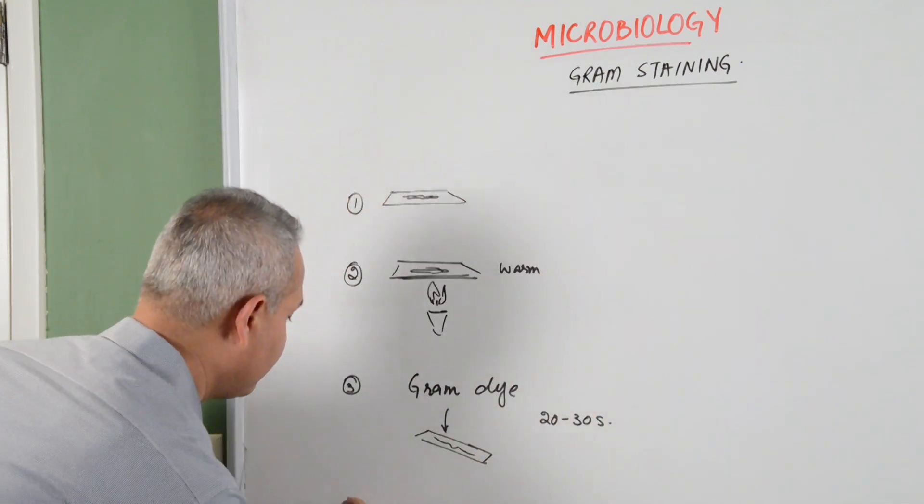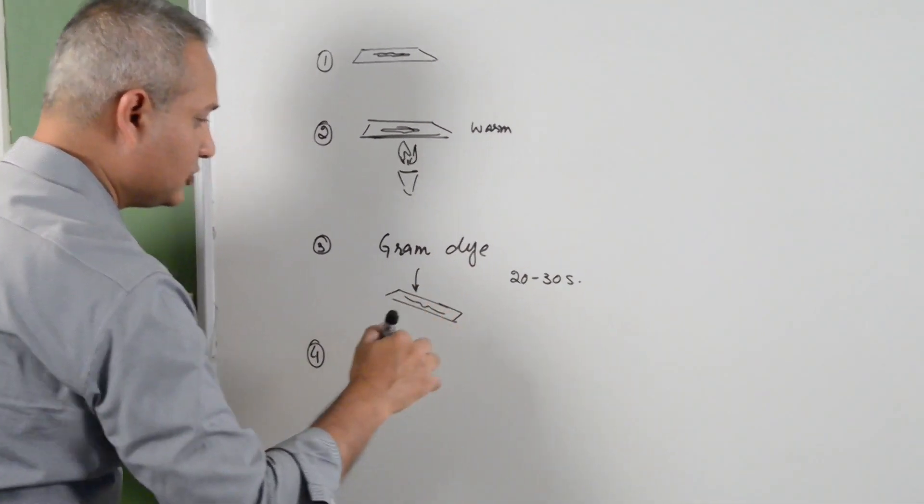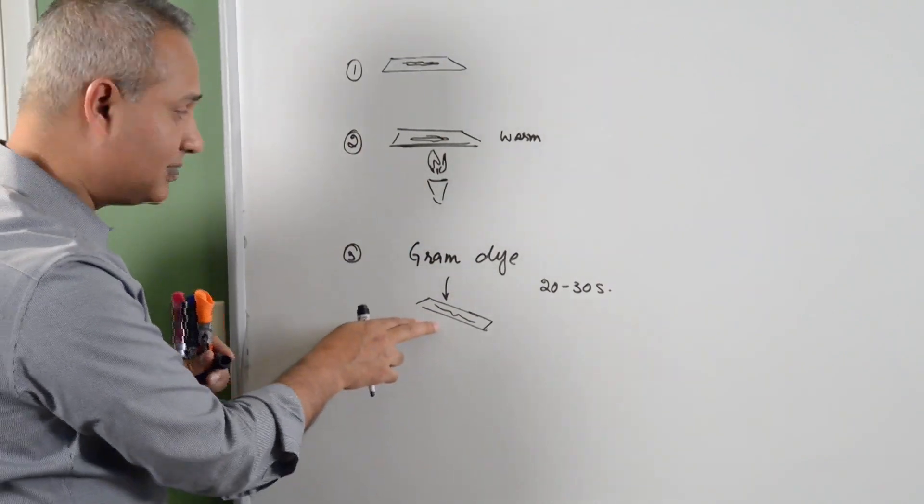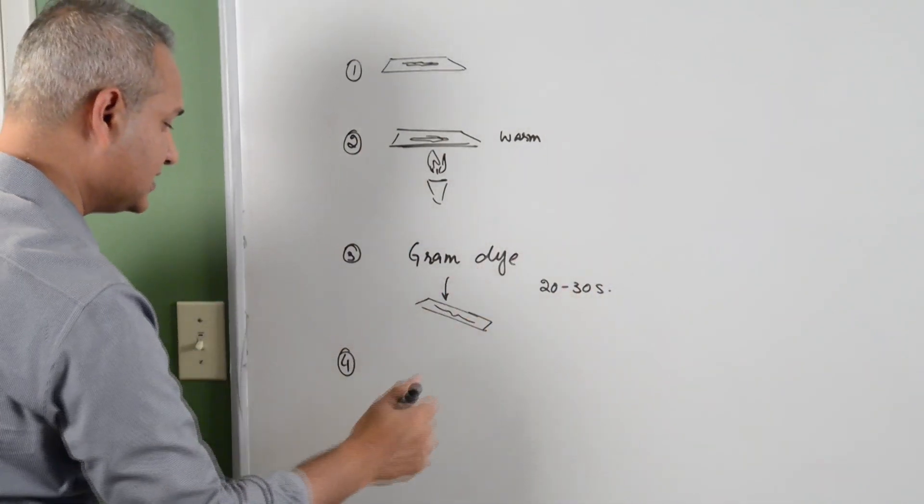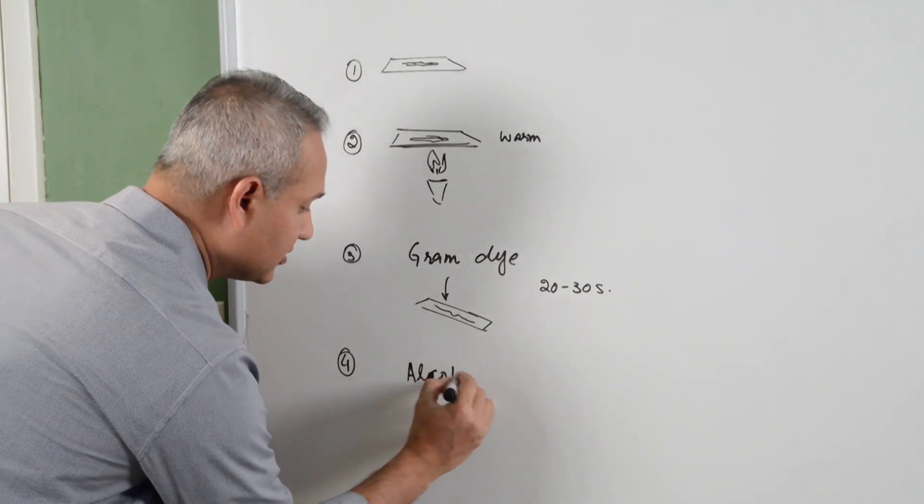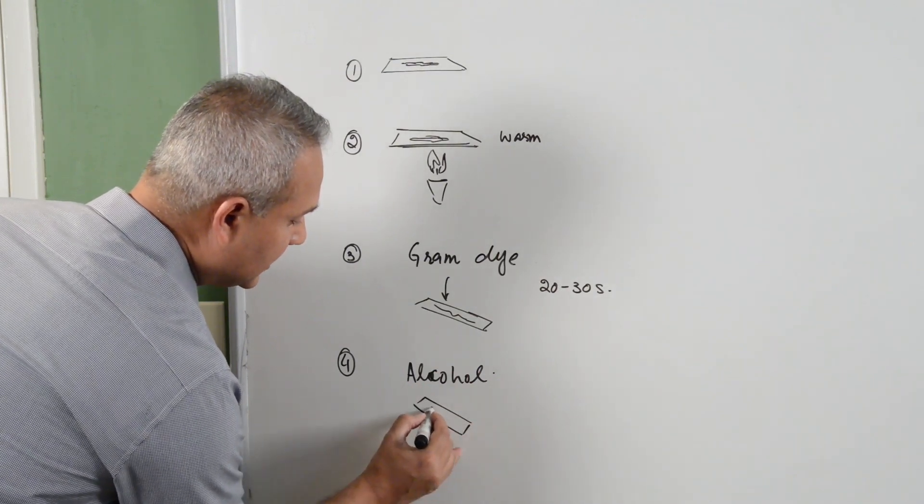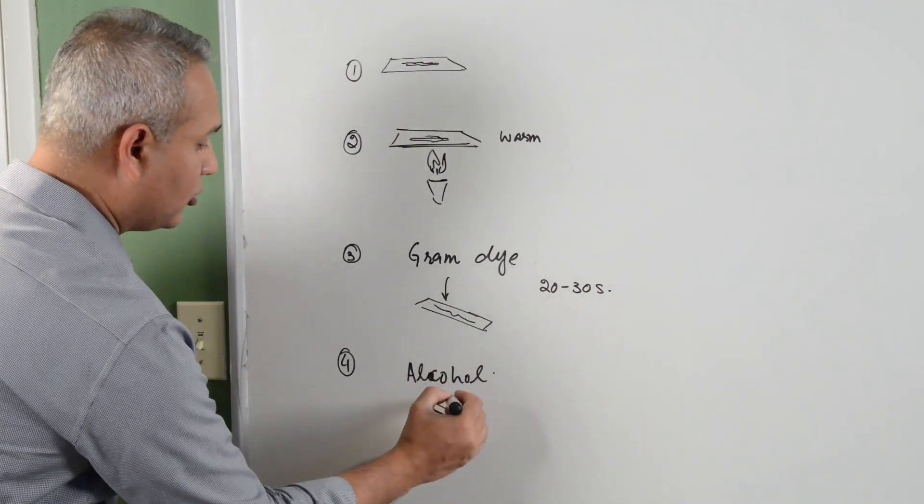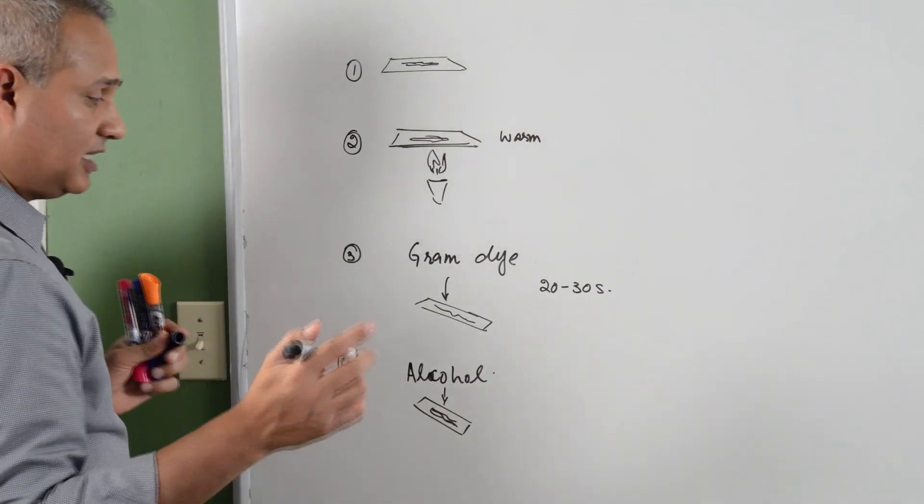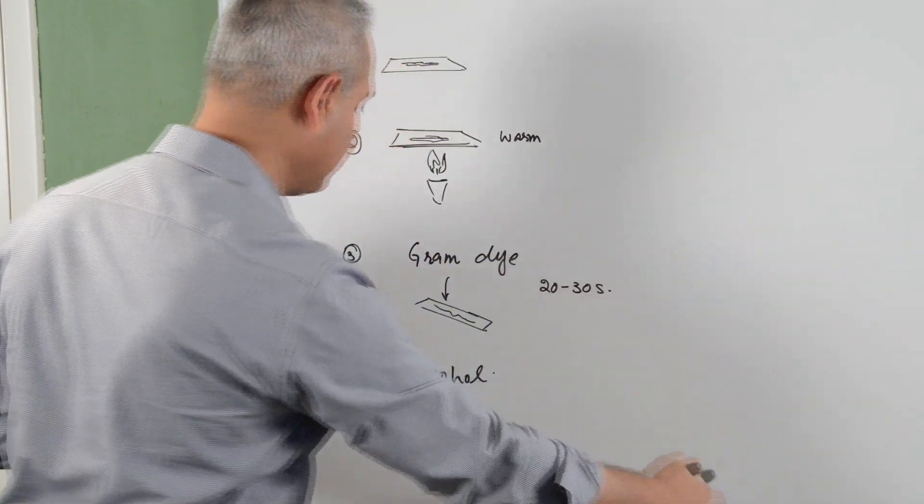And then what you do is in step number 4, you pour, so of course you keep washing. You wash it 20 to 30 seconds later, then you put alcohol on it, ethanol or alcohol. So again you keep the slide at an angle, you pour alcohol on it. That should also wash out the Gram negative bacteria's color and I will explain in a second why that happens.